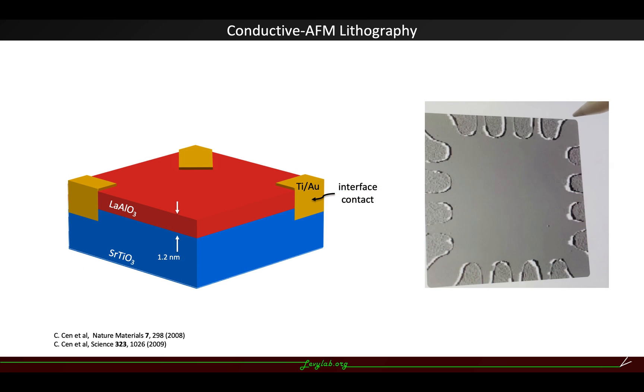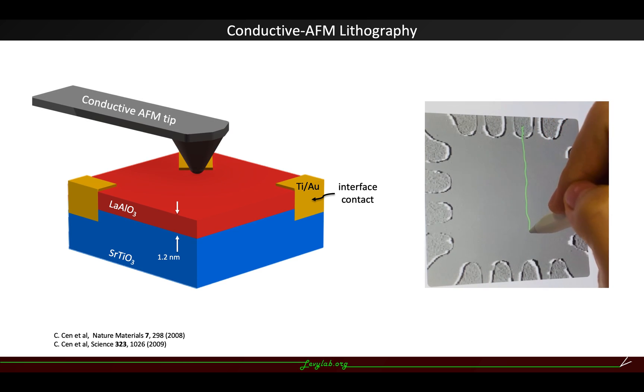To do this, we start from 3-unit cell LAO on STO substrate, which is insulating but highly tunable. When we apply a positive voltage to the AFM tip and drag it along the top surface,